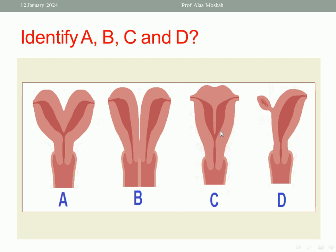What about C? C is septate uterus. As you see, the cavity of the uterus is divided into two compartments with septum in the middle. This is called septate uterus. This also occurs due to abnormality in the development of Mullerian ducts. We have two Mullerian ducts. When they fuse with each other, the separation at the middle must be resolved or removed or disappear. If it persists it leads to septate uterus.